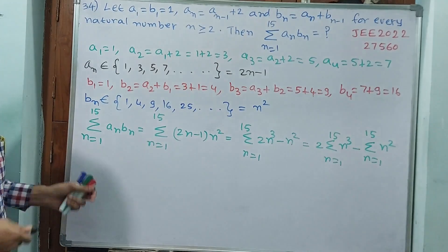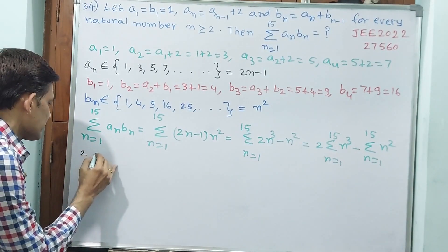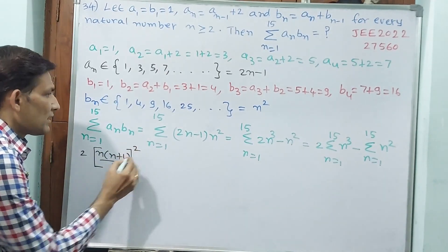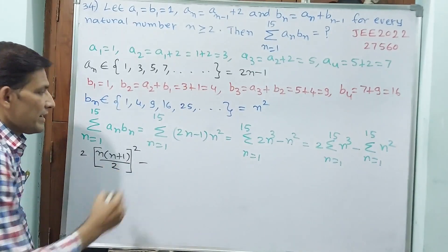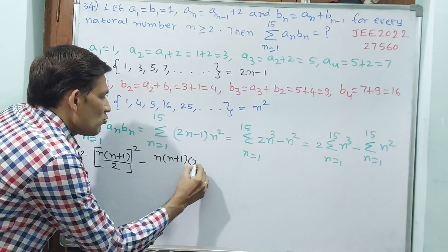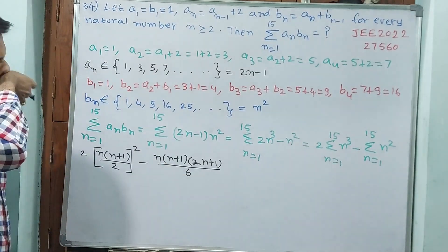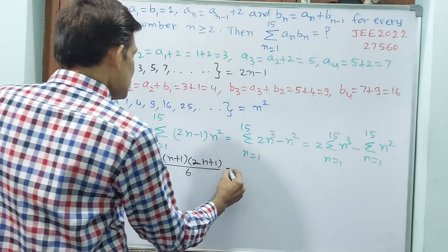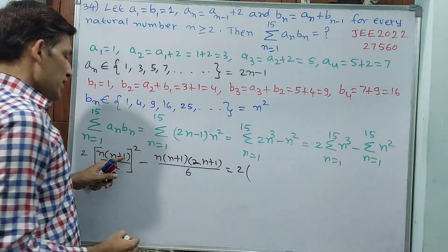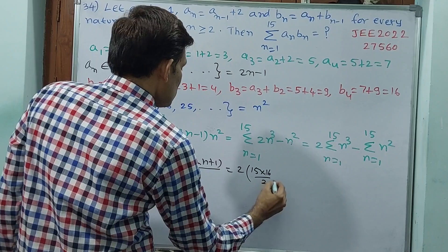We know sigma n cube is n into n plus 1 by 2 whole square. n into n plus 1 by 2 whole square, but outside 2 is there. Minus n square, n into n plus 1 into 2n plus 1 by 6. What is n? n is 15. We know very well.